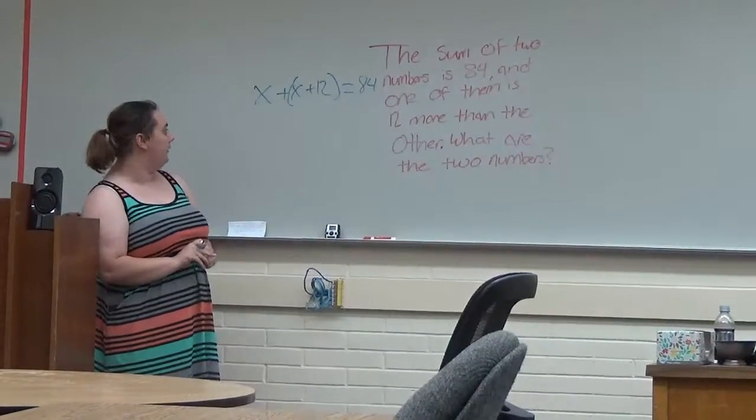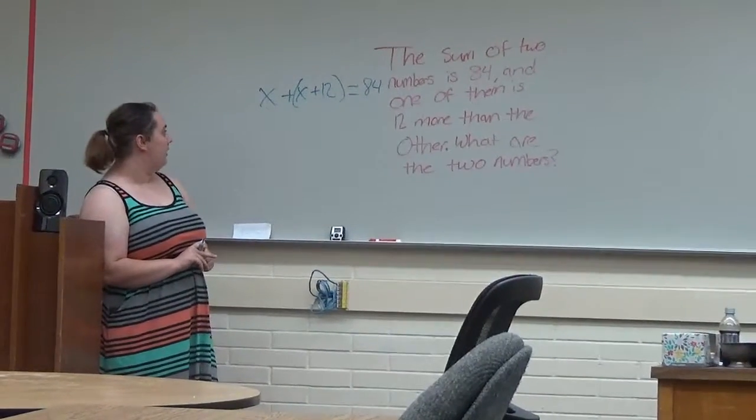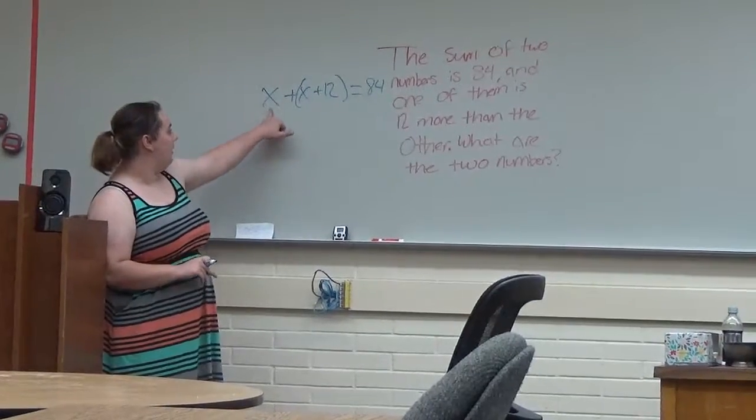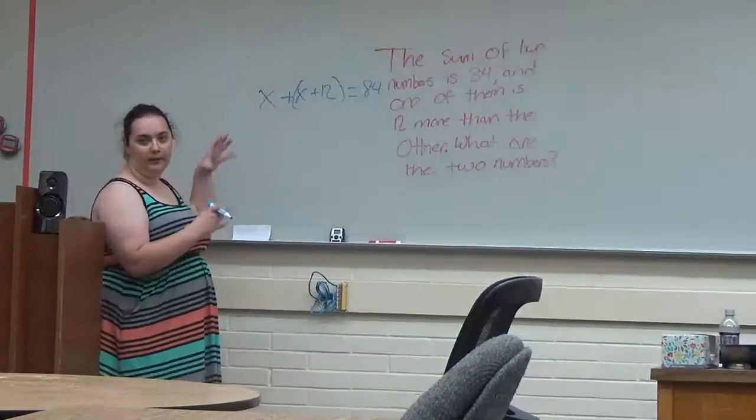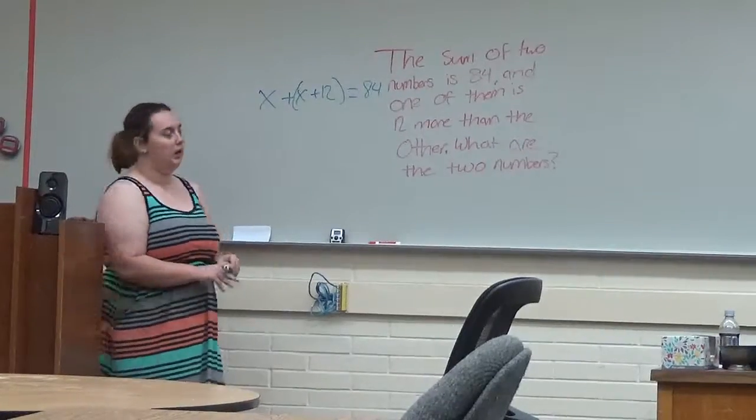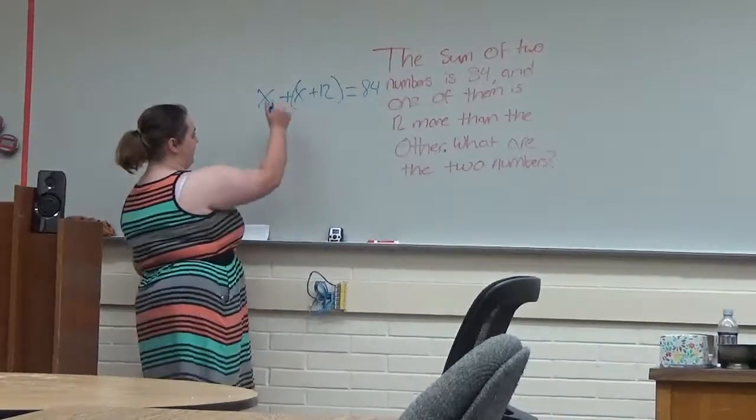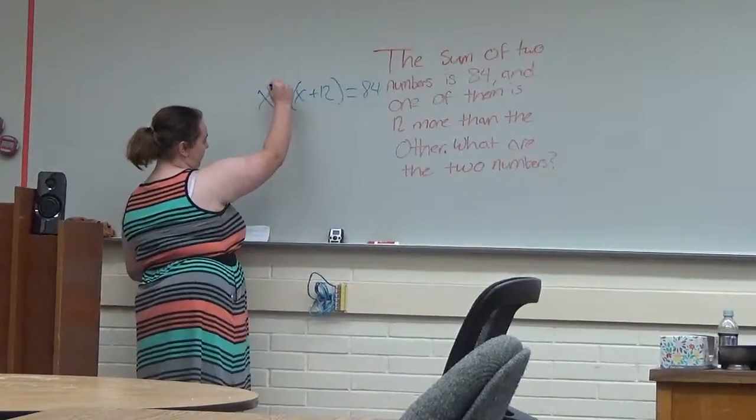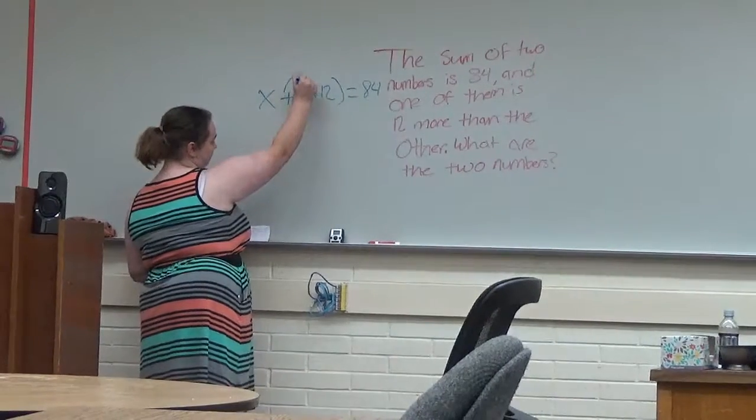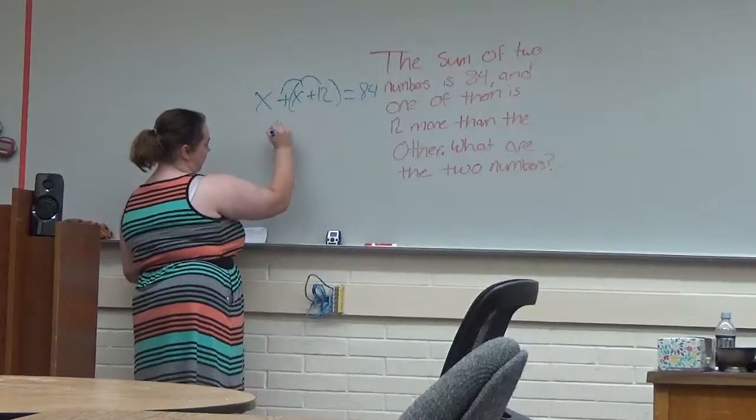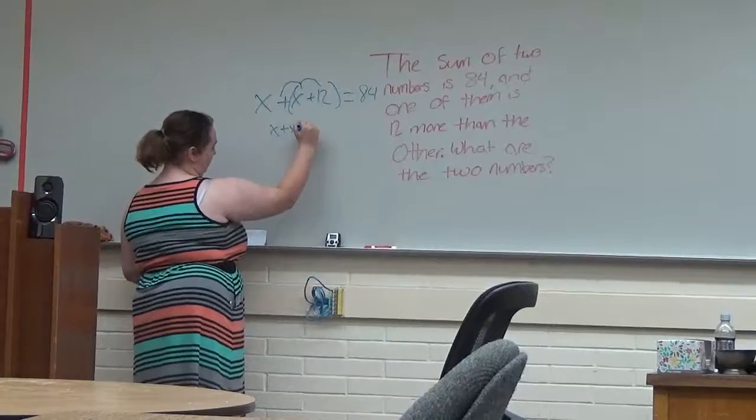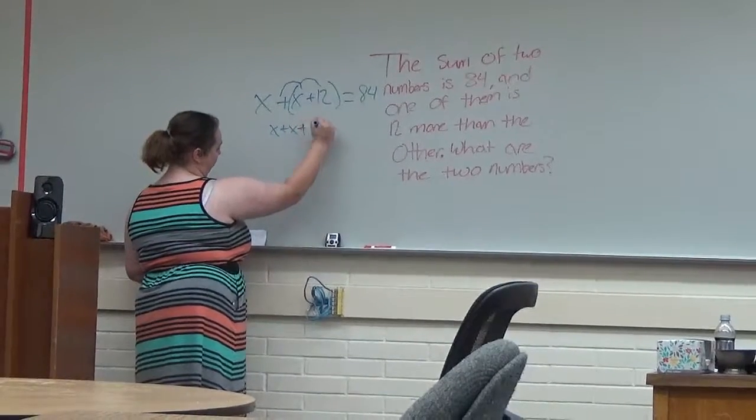So now what I would do is I would basically get one of the x's by itself so you can solve for x. So I would distribute, which is just a plus sign. So it would be x plus x plus 12 equals 84.